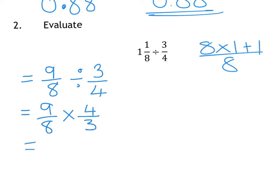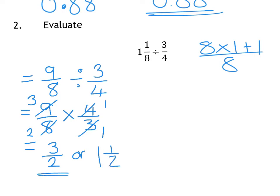Then you can either do some cross-cancellation diagonally, or you can just do top times top, bottom times bottom. Looking at 9 and 3 diagonally, divide them both by 3, gives you 3 and 1. The other diagonal, they both divide by 4, giving you 1 and 2. So 3 times 1 on top, 2 times 1 on the bottom gives 3 over 2. You could write that as 1 and a half, but leaving it as 3 over 2 is fine. Alternatively, 9 times 4 is 36, 8 times 3 is 24, which simplifies to 3 over 2 as well.